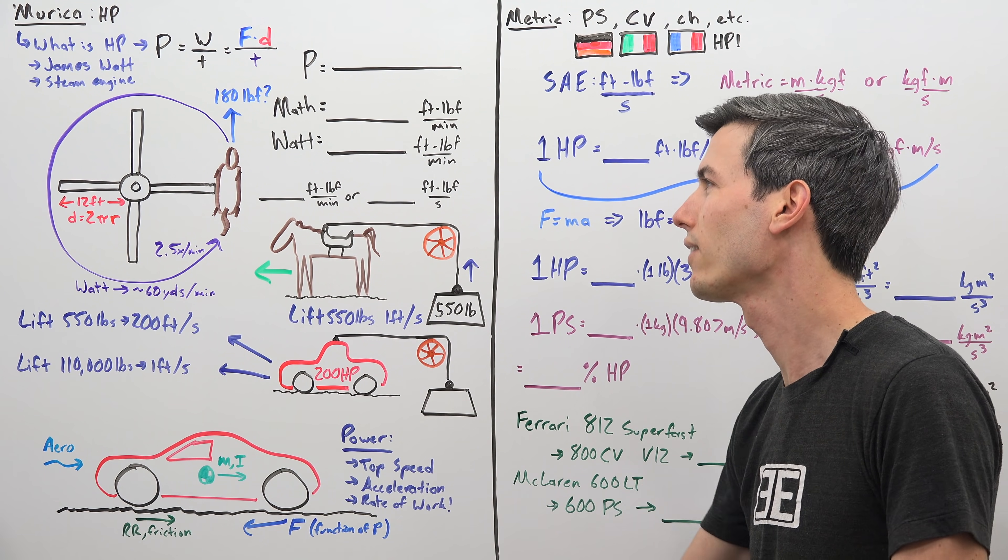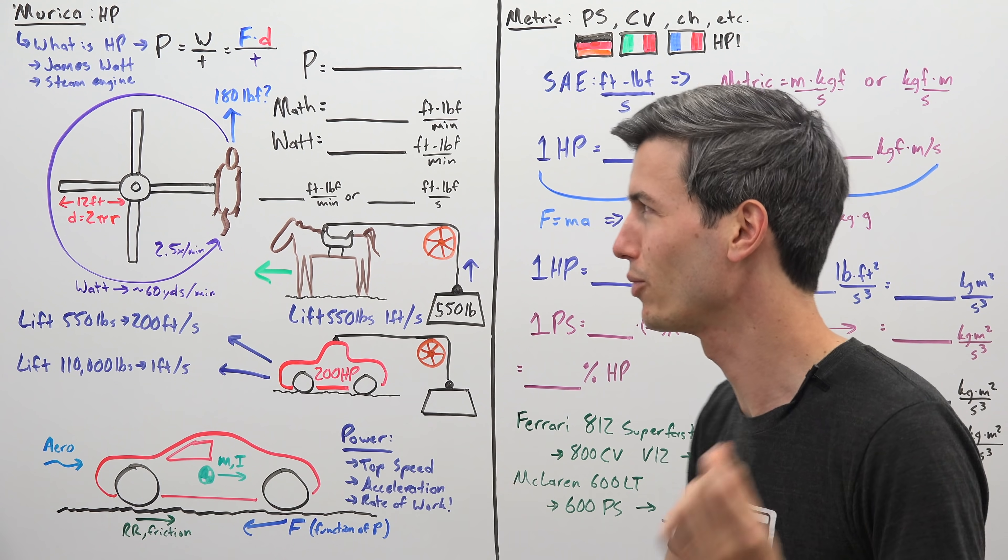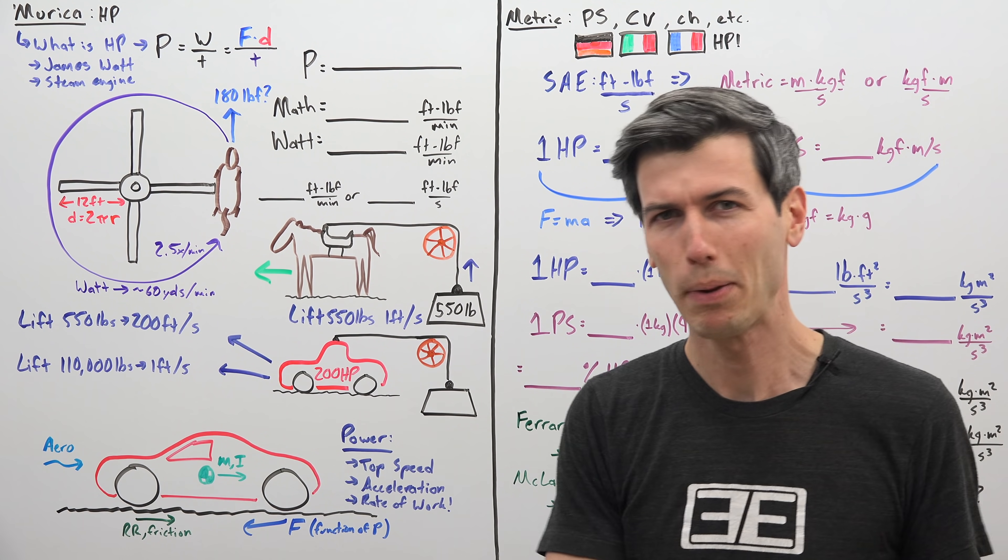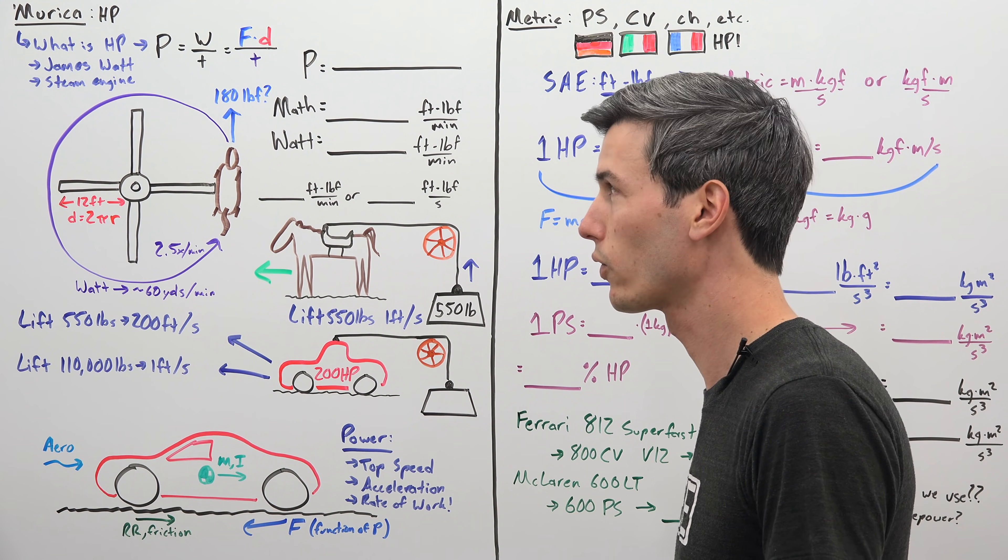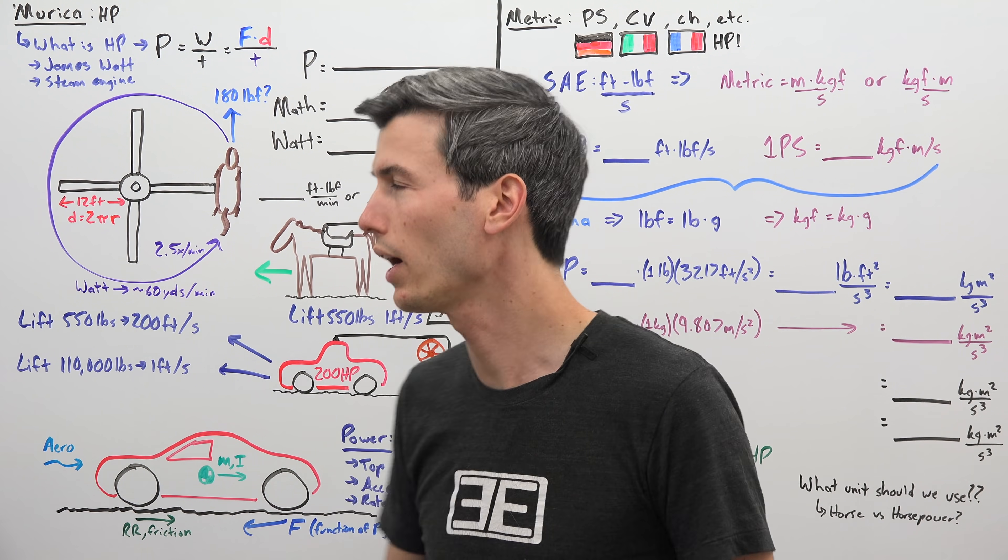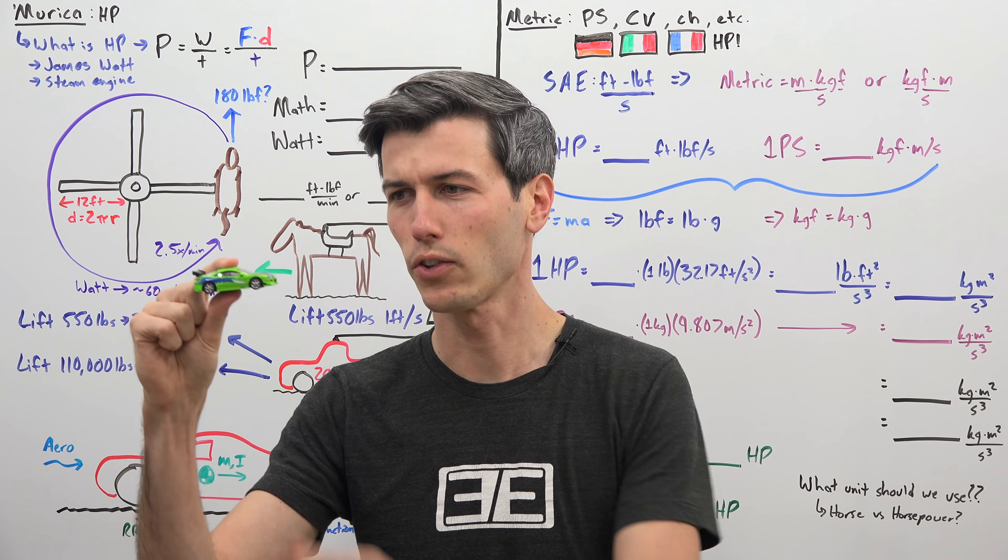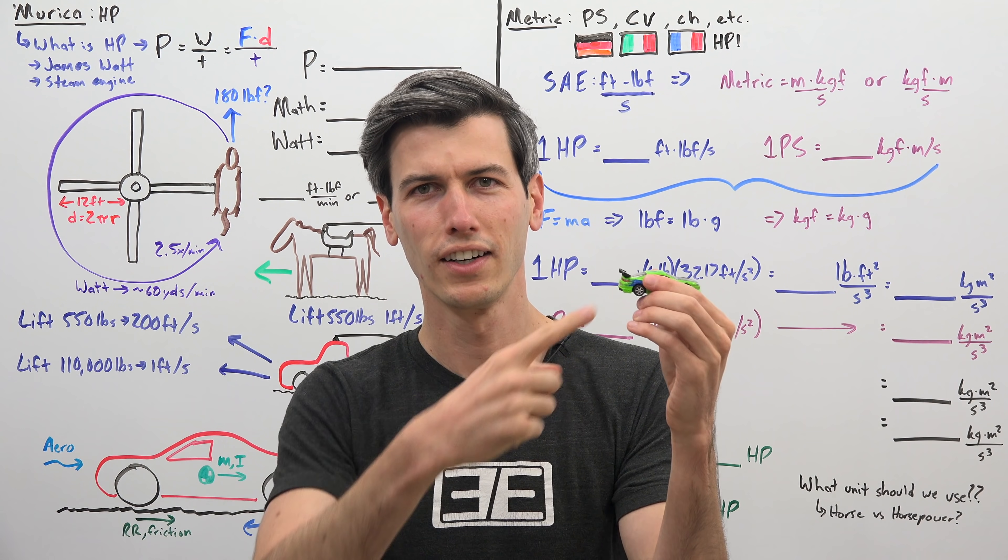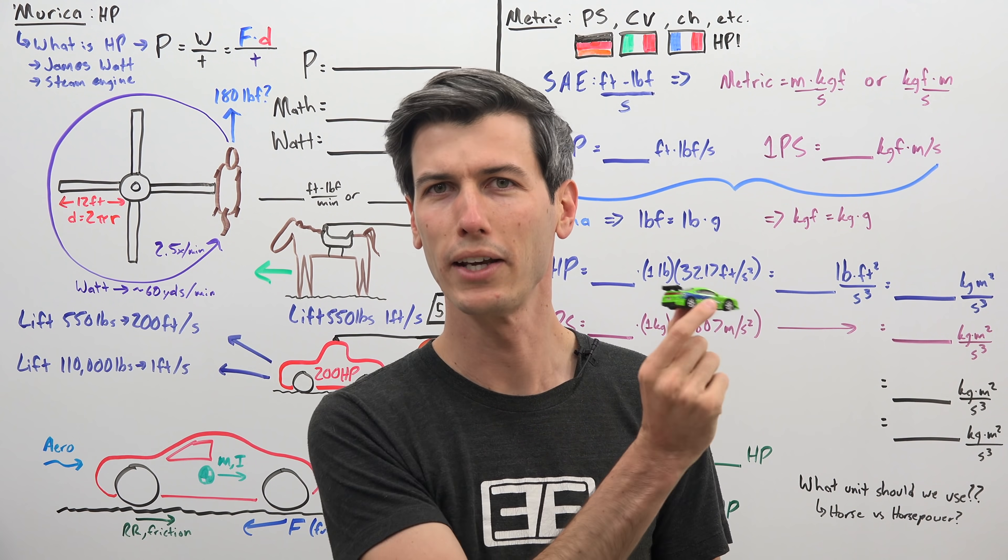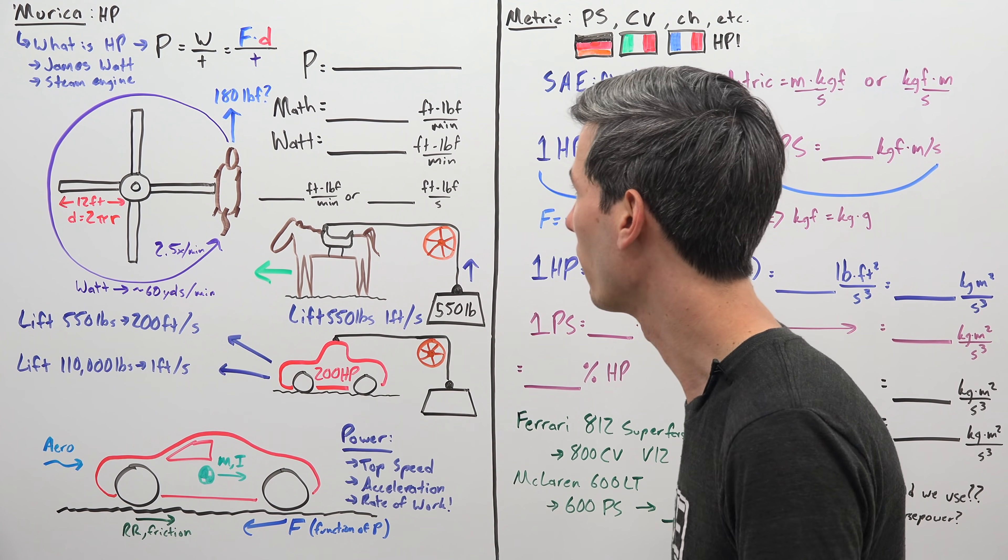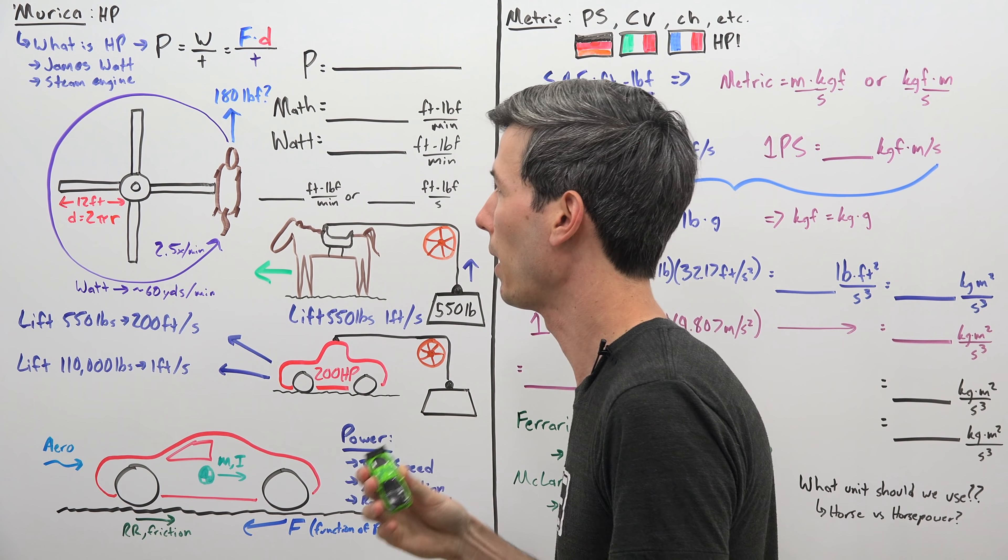So we're going to get through that starting with what is horsepower? Horsepower is a unit of power. Well what is power? Power is work over time. Now that sounds useless and confusing, so what is work over time? Well work is force times distance. So if you have a car, it takes a certain force to push this car a certain distance. That's work. Now how quickly you move it from here to here, that is power. So power is simply force times distance divided by time.